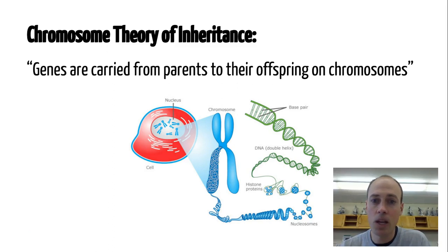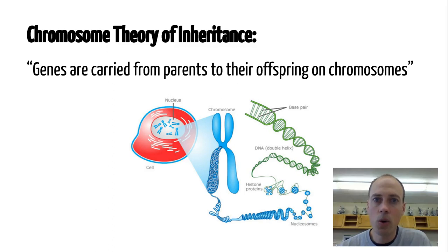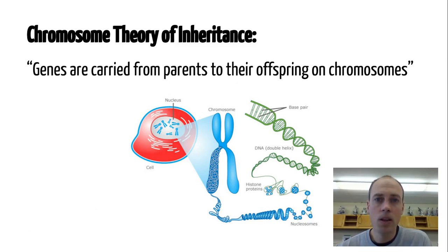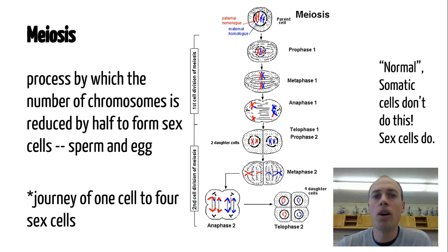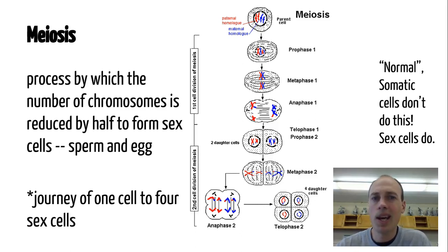That is our genetic information that is great for coding and giving the instructions for making proteins that eventually make us look the way we do. It gives us our heredity, our genes. So how do we get from a body cell that has a normal number of chromosomes to a sex cell that only has half that?